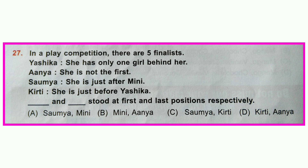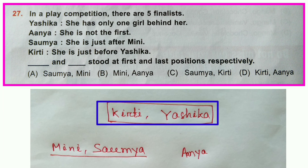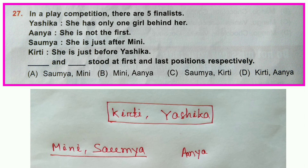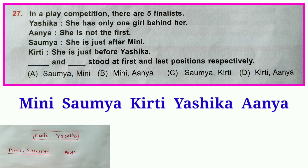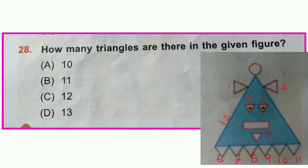Question number twenty-seven: In a play competition there are five finalists. Yesika has only one girl behind her. Anya is not first. Saumya is just after Minni. Kirti is just before Yesika. Since Yesika has only one girl behind her, Minni and Saumya must come before Kirti. Anya is left and will come behind Yesika. The final arrangement is: Minni, Saumya, Kirti, Yesika, Anya. Minni is first and Anya is last. Option B is correct.